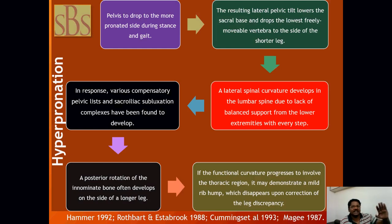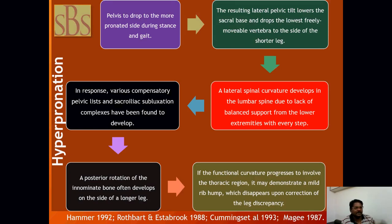A lateral spinal curvature develops in the lumbar spine due to lack of balance and support from the lower extremities. With every step, there will be unleveling of the pelvis, causing a lateral tilt of the lumbar spine curvature.